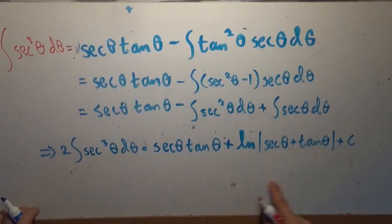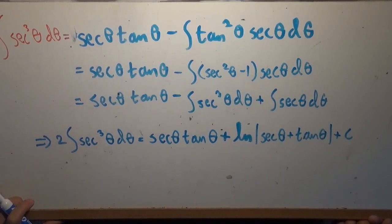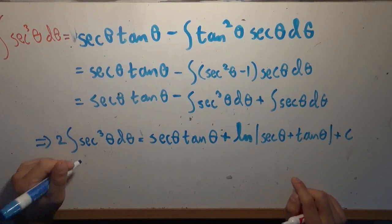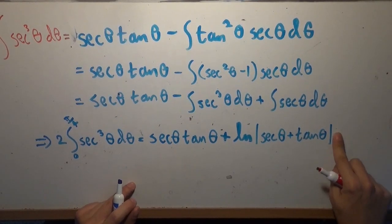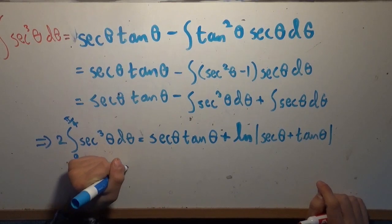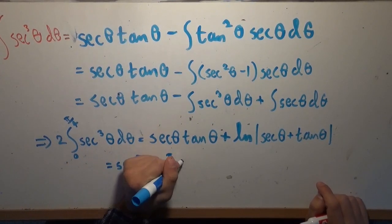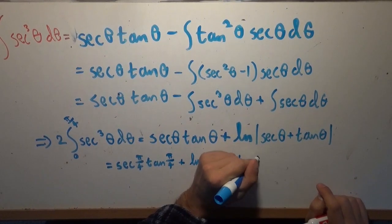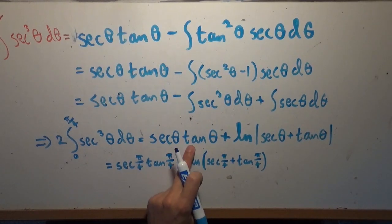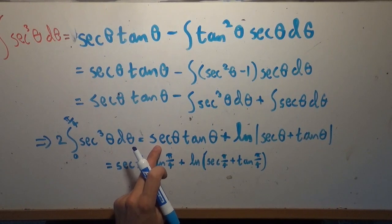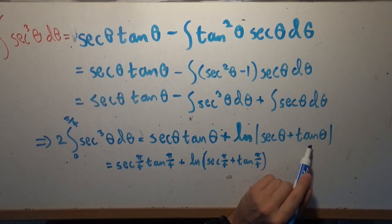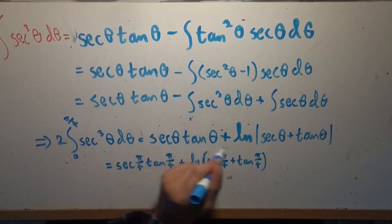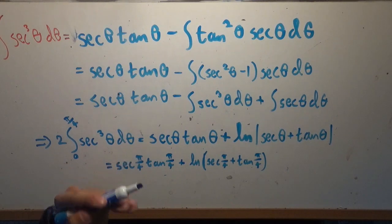This is a beautiful result. As long as we can plug in 0 to pi over 4, we'll get our universal parabolic constant. All we have to do is evaluate this from 0 to pi over 4 — there won't be any constant. This is just secant of pi over 4 times tangent of pi over 4, plus ln of secant pi over 4 plus tangent of pi over 4. Tangent of 0 is 0, secant of 0 is 1, so the lower bound evaluates to 0 plus the natural logarithm of 1, which is also 0.